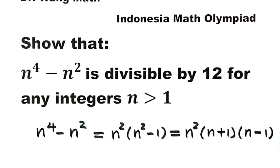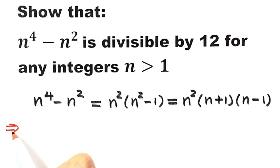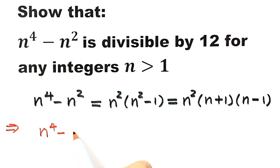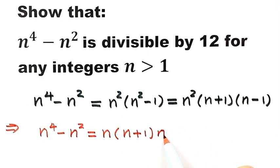Now let's reorganize this expression. So n to the fourth minus n squared equals n times (n plus 1) times n times (n minus 1).